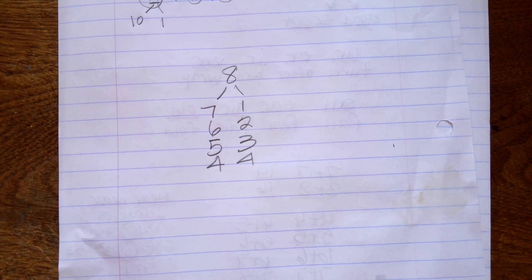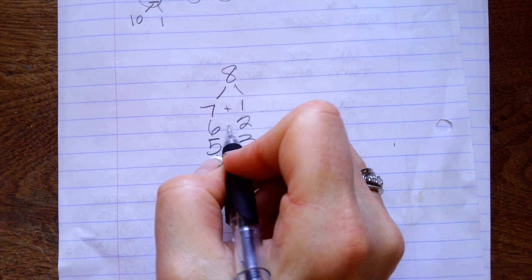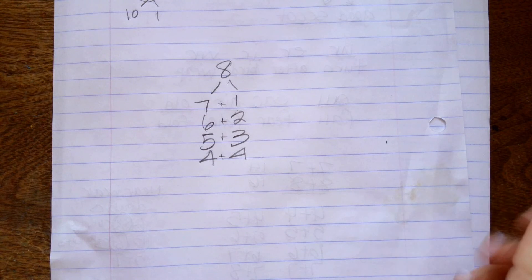I can split it into a 5 and a 3, a 4 and a 4. I can split it into any of those things. The only rule is, is that when you add these together, they have to equal 8. Does that make sense?